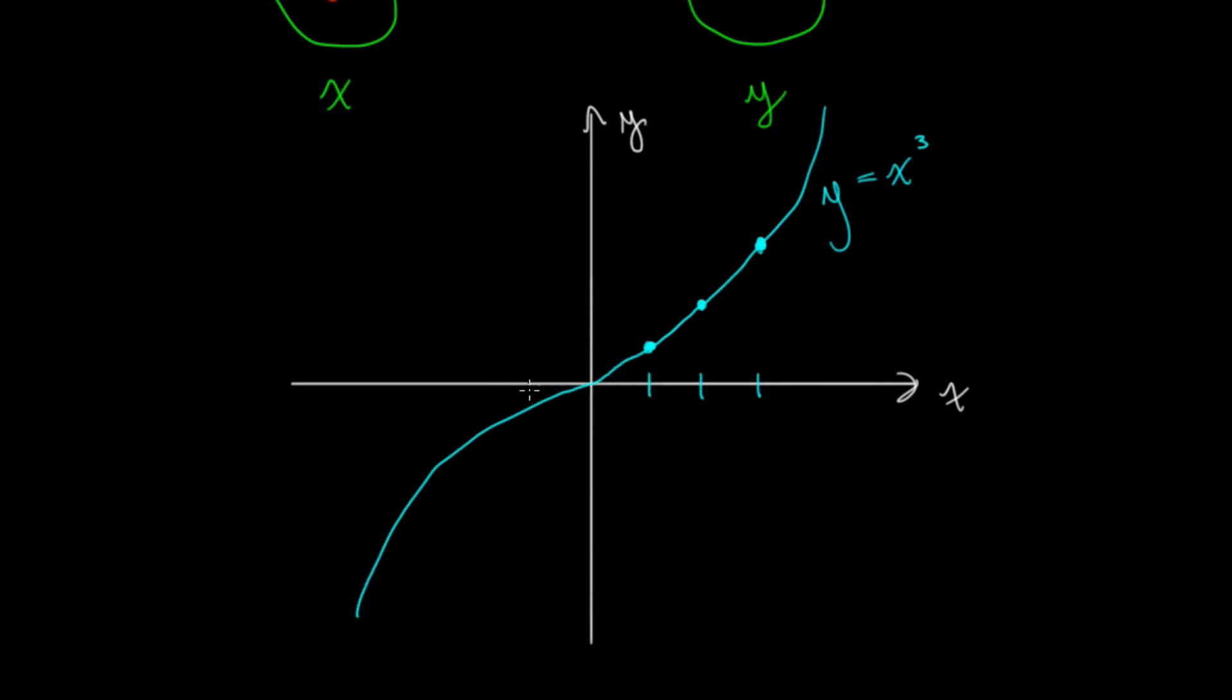Of course, we can see that every input is going to produce a unique output, but is there some kind of easy test that we could just implement really quickly and tell? And actually, there is. It's called the horizontal line test.